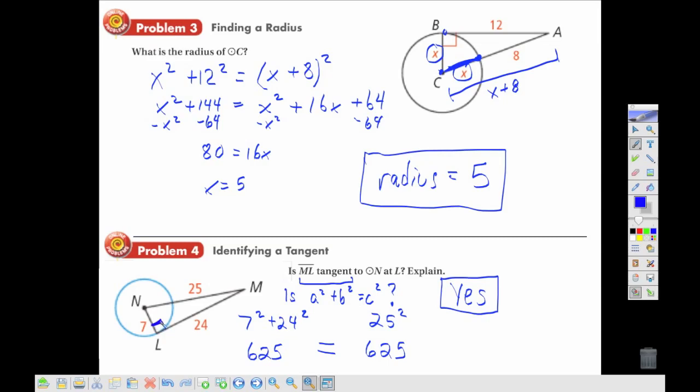Because that right triangle, the Pythagorean theorem, is telling us that we have a right angle here, making that a tangent.